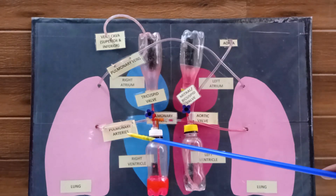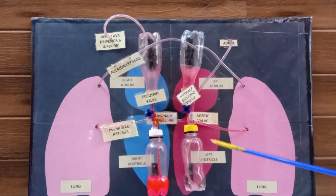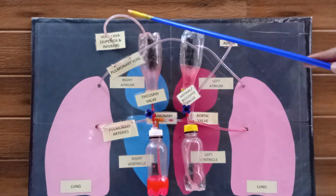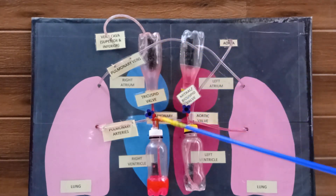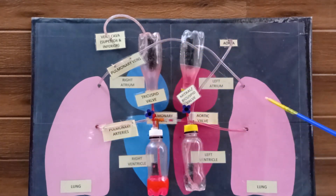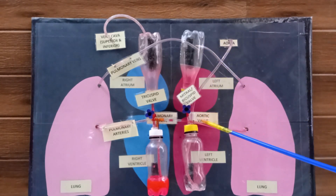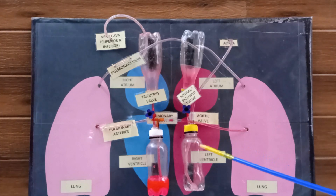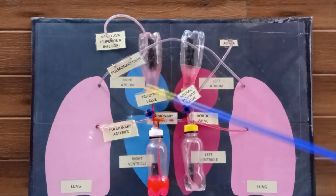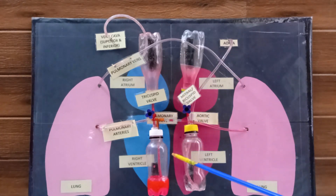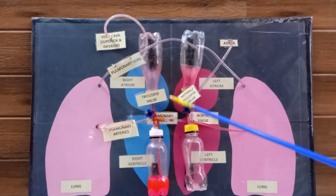The heart is a muscular organ divided into two separate sides. The right side of the heart receives deoxygenated blood from the body parts and pumps it to the lungs. After oxygenation, this blood reaches the left side of the heart from the lungs, where it is pumped back into the body. The left and right sides are separated by a wall called the septum to prevent the mixing of oxygenated and deoxygenated blood.